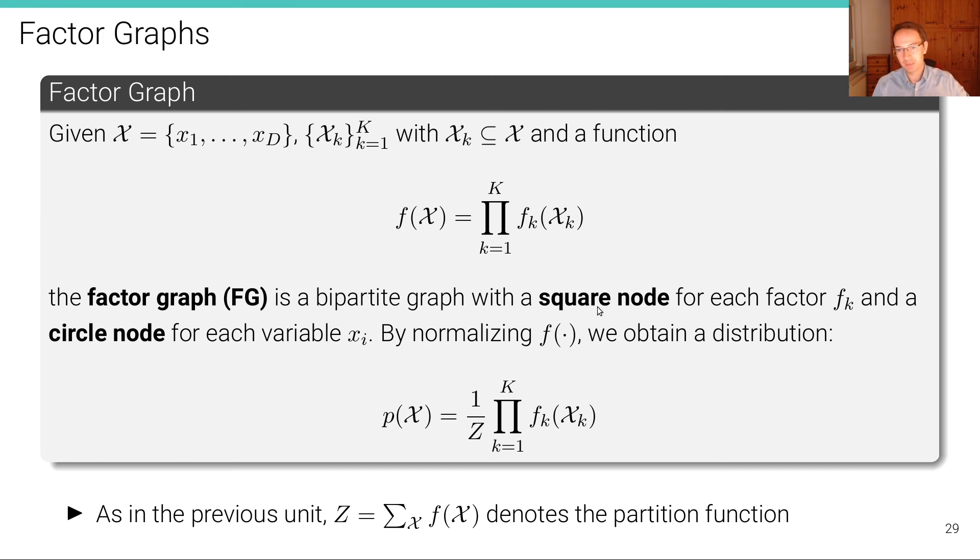So the factor graph is a bipartite graph with a square node for each factor Fk and a circle node for each variable. So we are trying to graphically distinguish factors, which are functions, from the variables.